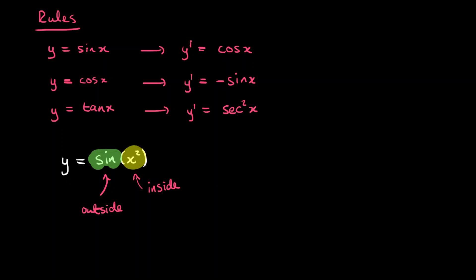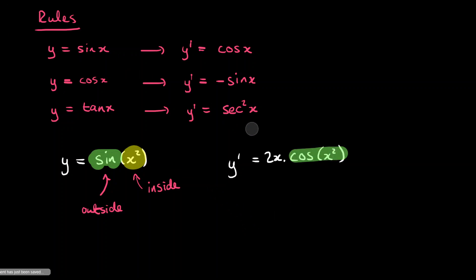If you want to differentiate this, then what we've got to do first is differentiate the function on the outside. So sine differentiates to give cos, so we're going to get cos of x squared. And then we've got to differentiate the function on the inside — we differentiate x squared, that gives us 2x. And we multiply through by that 2x. So the function on the outside, the sine, differentiates to give cos, and the function on the inside, x squared, gets differentiated to give 2x, and we multiply those two together.